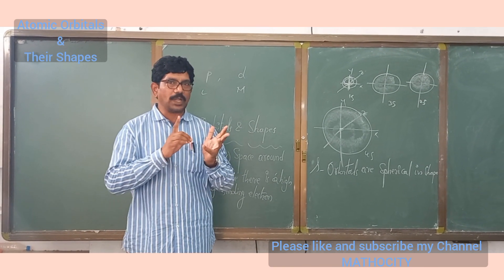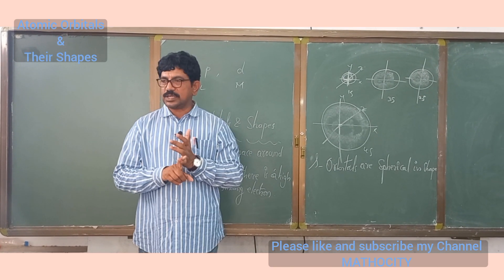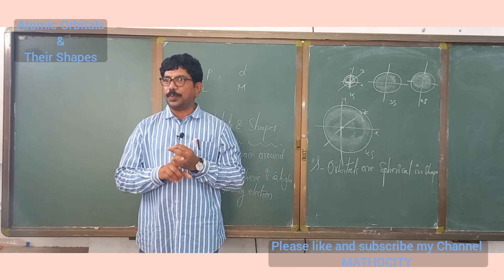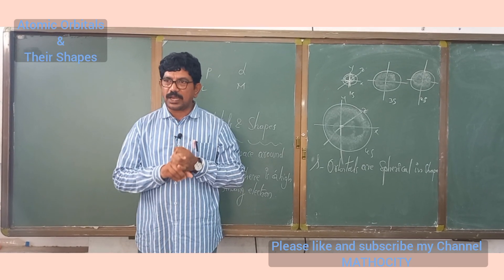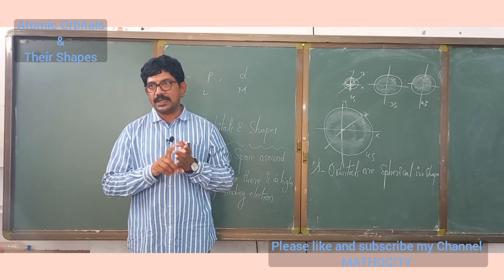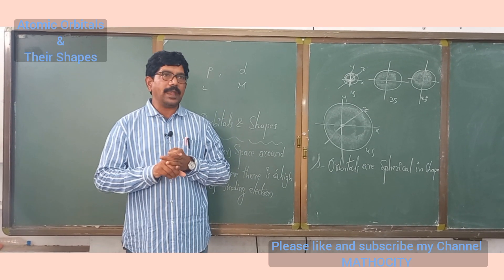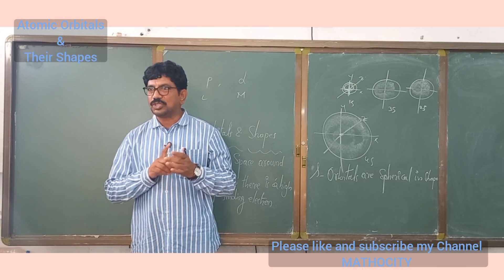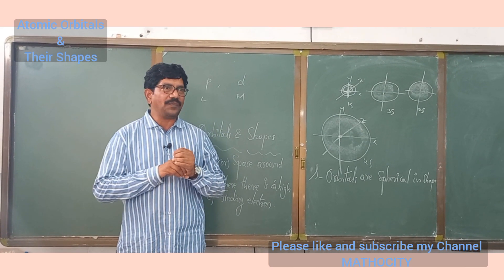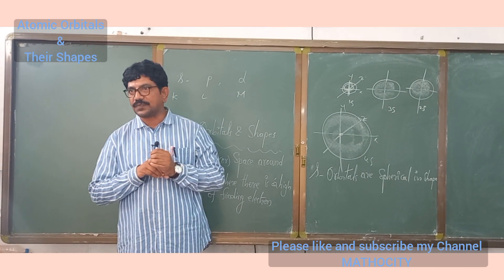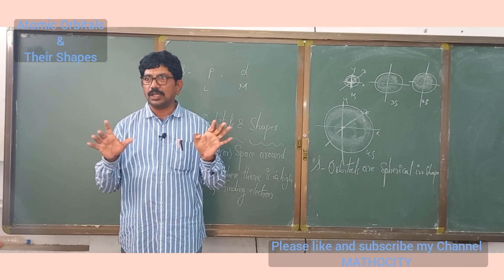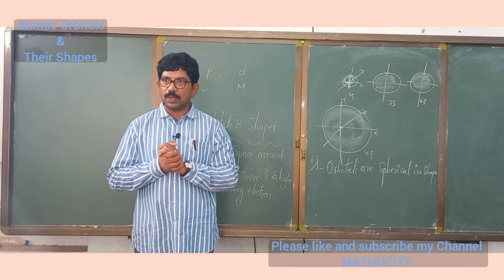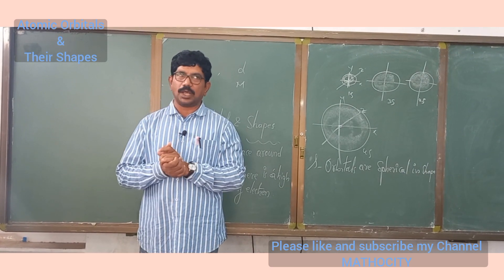The S orbital starts from the K shell, the P orbital starts from the L shell, the D orbital starts from the M shell, and the F orbital starts from the N shell. Now let us learn the shape of the S orbital.